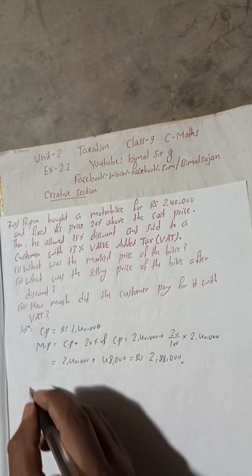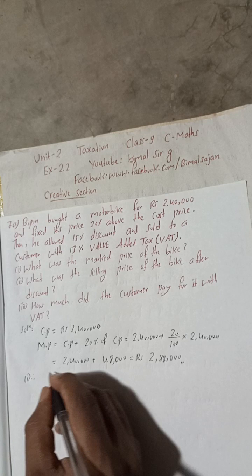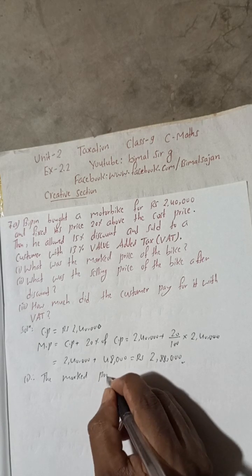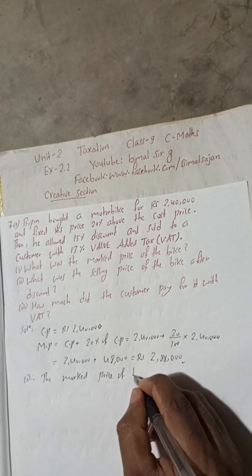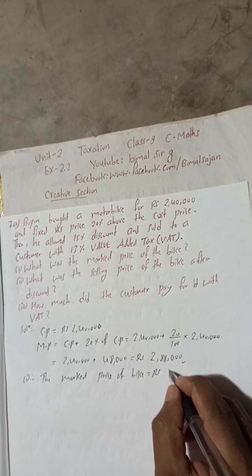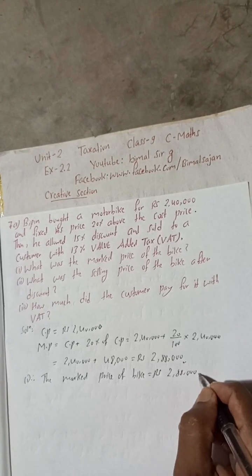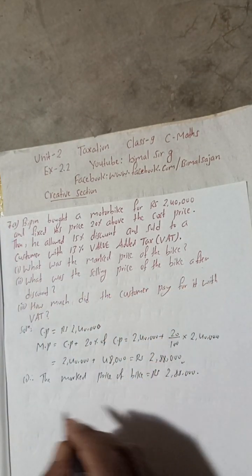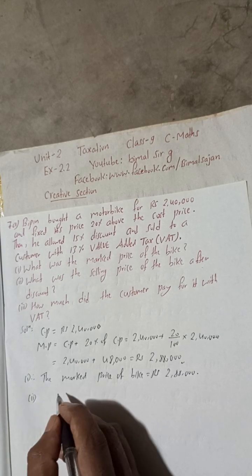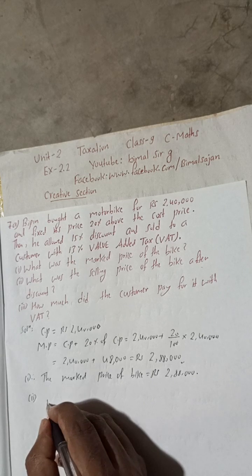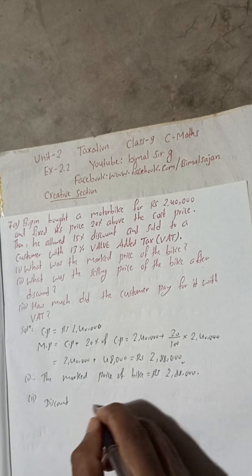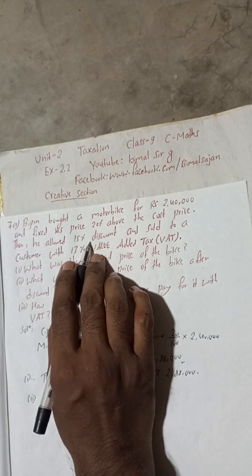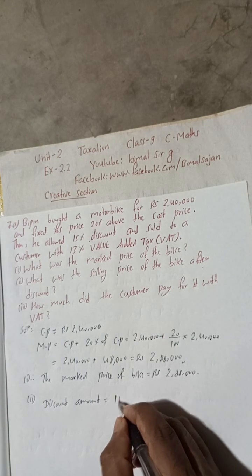Therefore, the marked price of the bike equals Rs 2,88,000. That is our answer to question number one. Now for number two — what was the selling price of the bike after discount? We need to calculate the discount amount first. Discount amount equals 15 percent of the marked price.